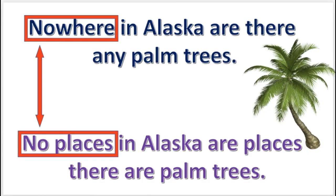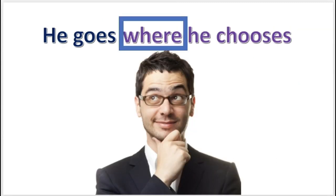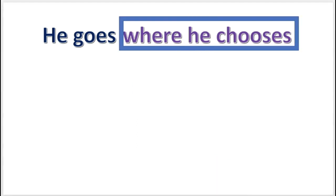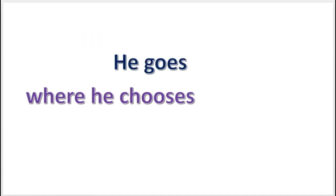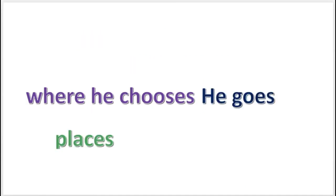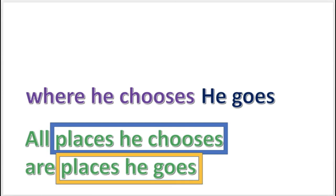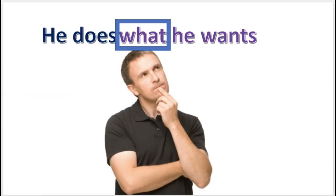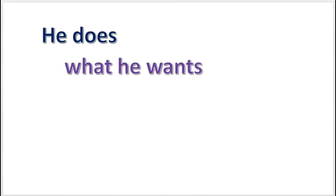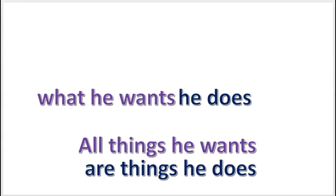In the next example, an adverb appears in the middle of the statement. To prevent confusing the subject term with the predicate term, move the adverb and everything that goes with it to the front. Then use 'places' to translate the adverb. Don't confuse the subject term with the predicate term, or you'll be committing the fallacy of illicit conversion. When a pronoun appears in the middle of the statement, first move the pronoun to the front, and then translate the statement.